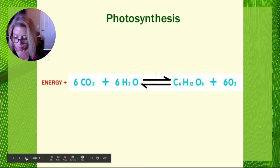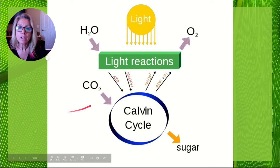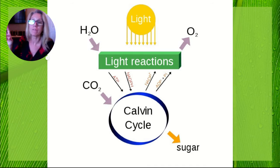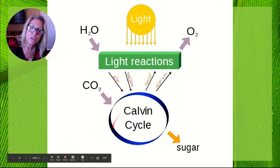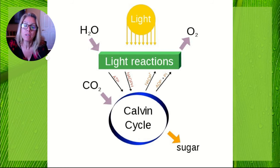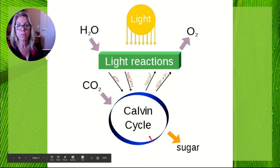Now the two reactions — light dependent and light independent. This is an oversimplification, but you can see the thylakoid membranes — the green pancake stacks — where the light reactions occur. The Calvin cycle, also called the light independent reaction, occurs in the stroma. Back when I went to school they called it the dark reaction because it doesn't require light — but that name implied it needed to be dark, which is wrong. Dark reaction, Calvin cycle, and light independent reaction are all names you might be familiar with.